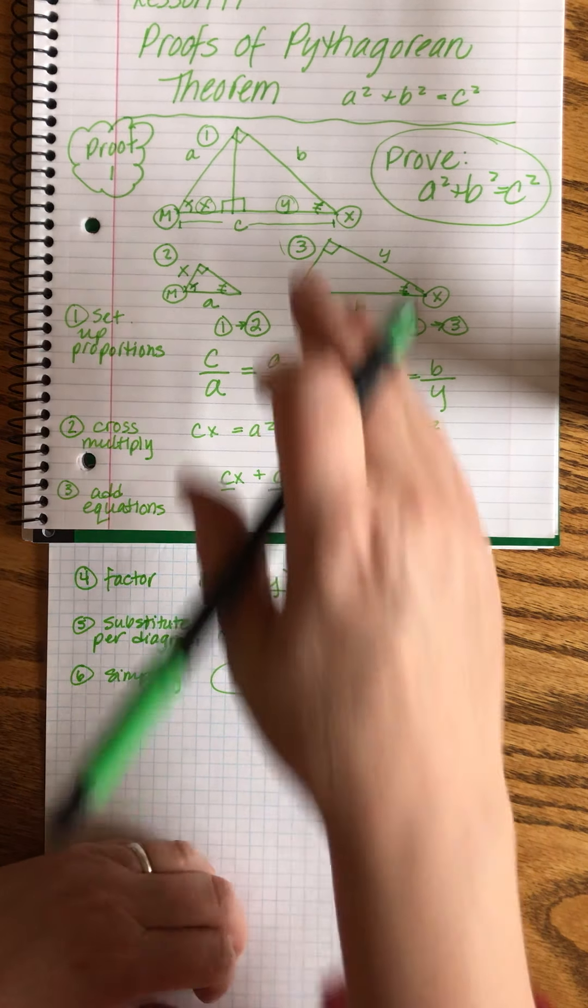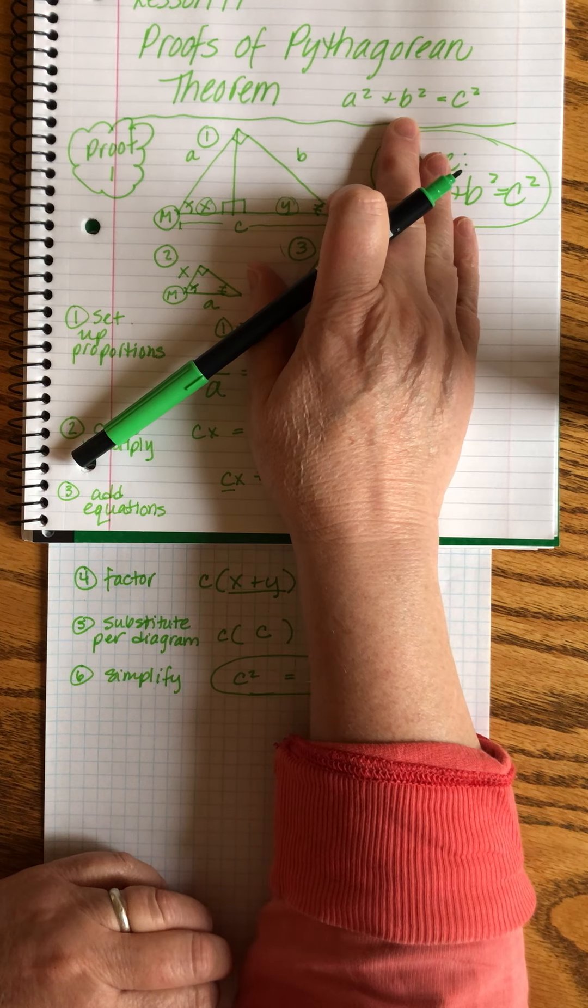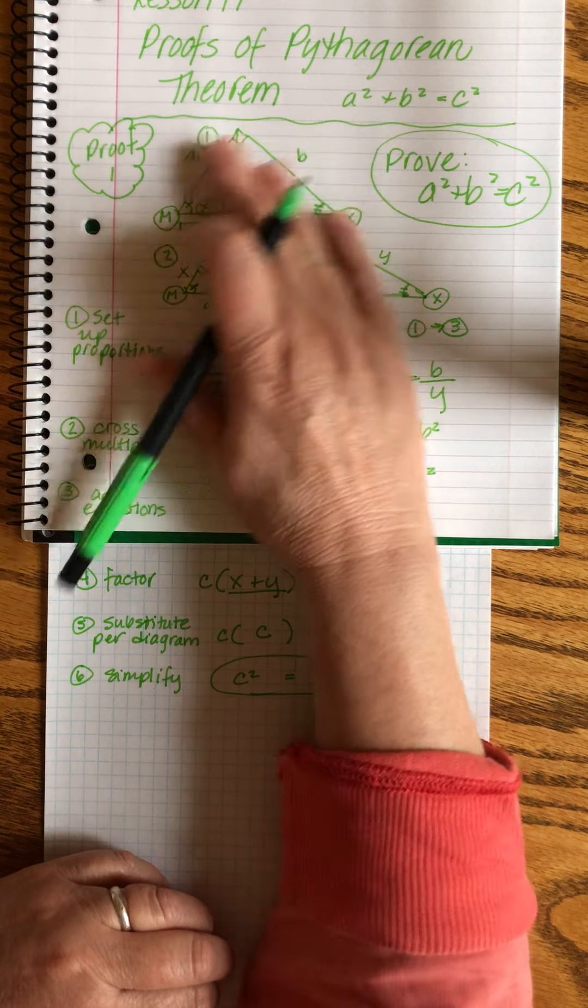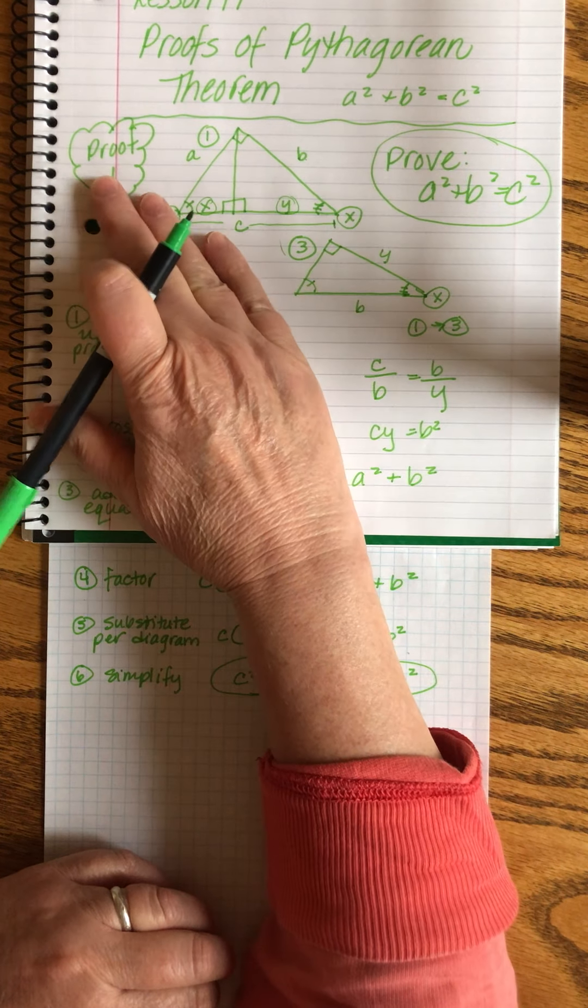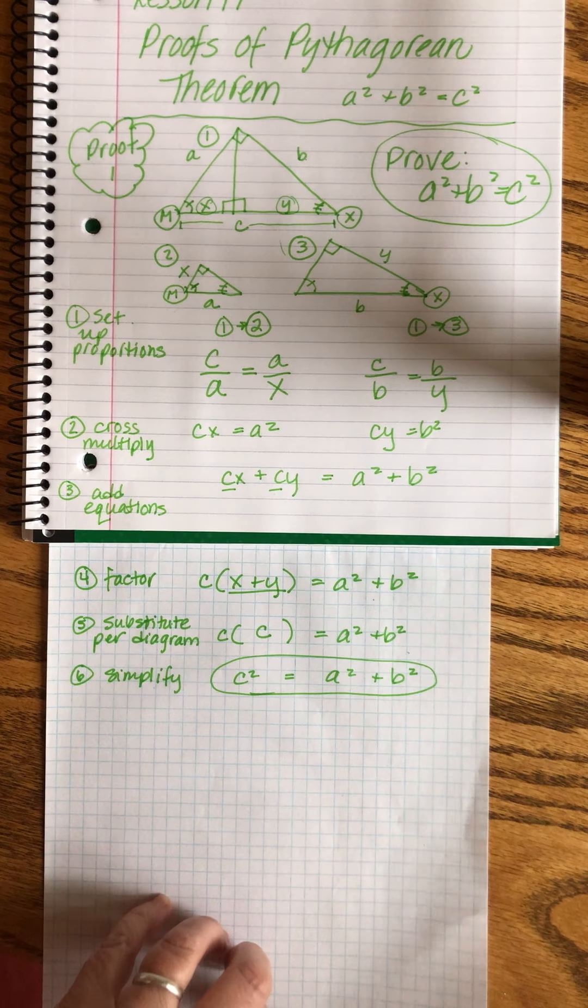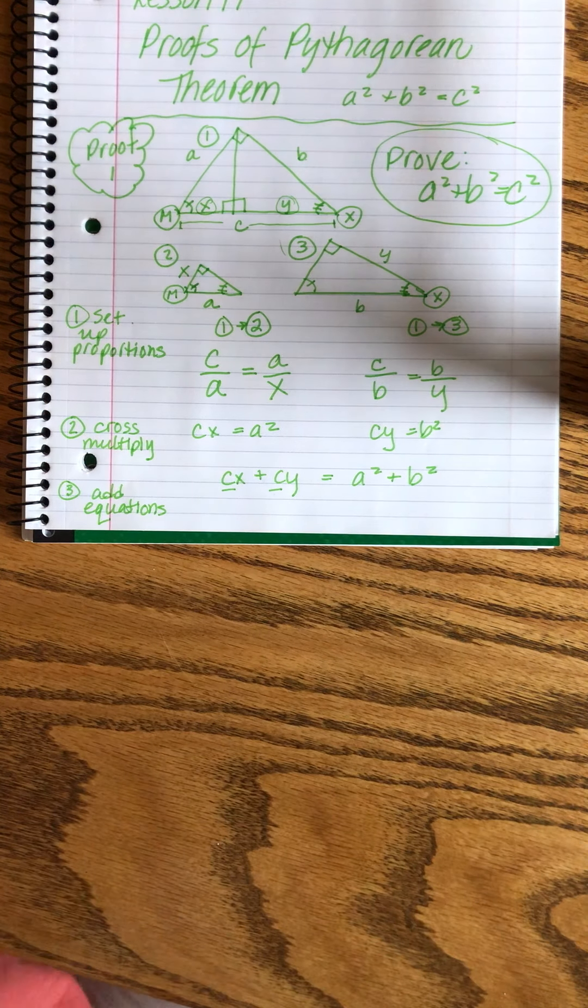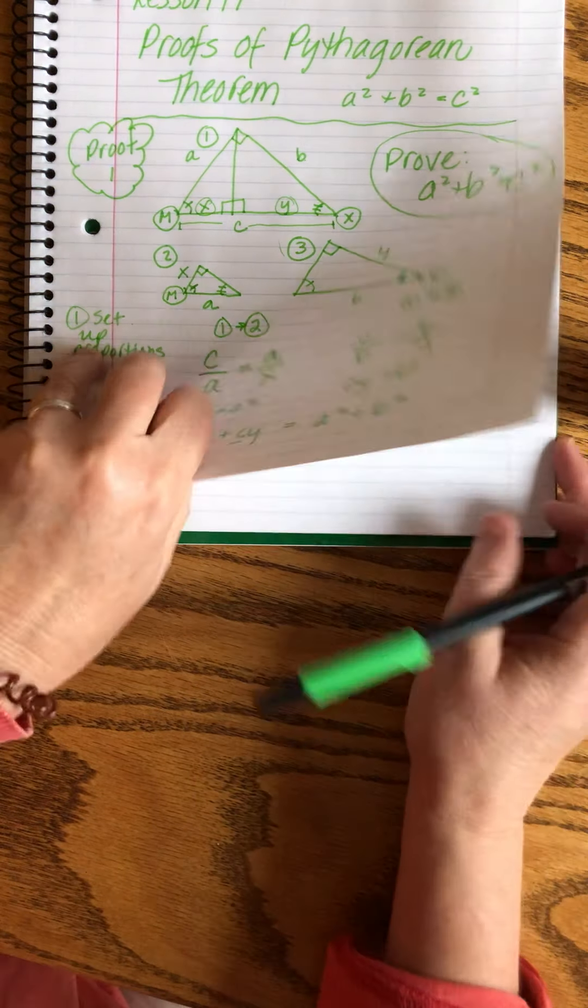All right? Now what we're going to do is we're going to go back to the beginning, forget about this triangle, and we're going to look at another way to prove Pythagorean theorem. A different process. Okay. Turning page.